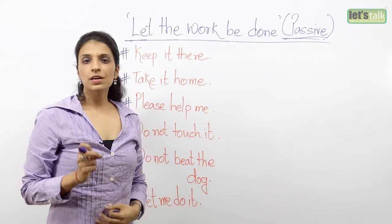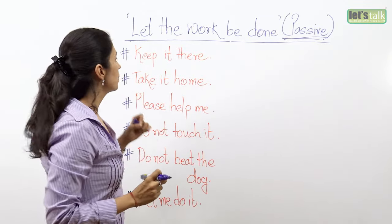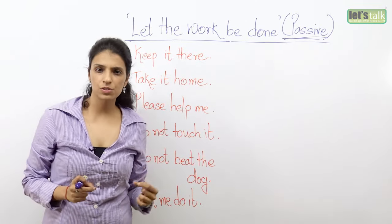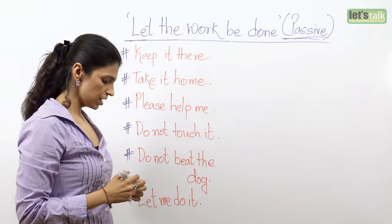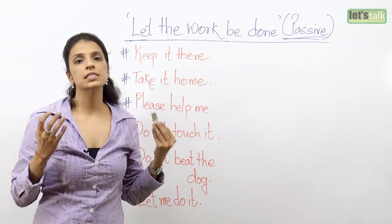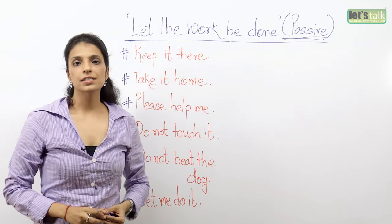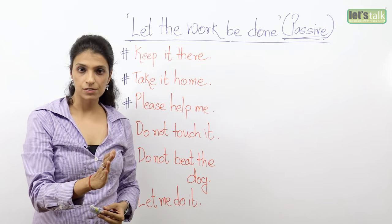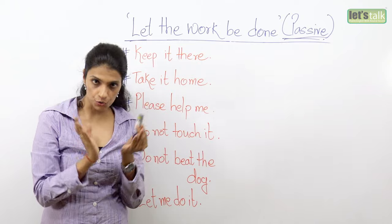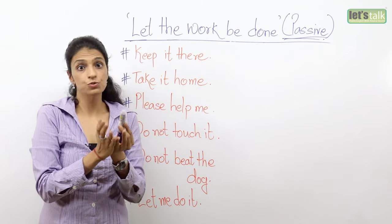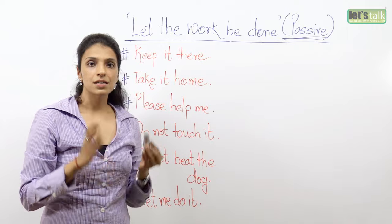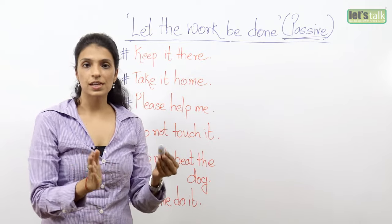First, let's understand what imperative sentences are. Imperative sentences are sentences that are commands, instructions, orders, or requests. For example, suppose a student is very naughty in class and disobeys the teacher continuously — she tells him 'Get out of the class.' She does not say 'You get out'; she says 'Get out.' So the subject 'you' is hidden — you do not use it. You just say 'Get out of the class.' That is a command; it's an order that the child has to follow.